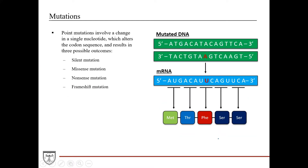Over the next few slides, we'll talk about different types of point mutations. A point mutation is where a single nucleotide gets changed, which results in a single nucleotide change in the mRNA sequence, which then changes the codon sequence, potentially changing the amino acid sequence. The four types are silent mutation, missense mutation, nonsense mutation, and frameshift — all very high yield for biochemistry and board exams.